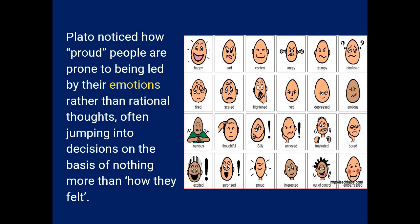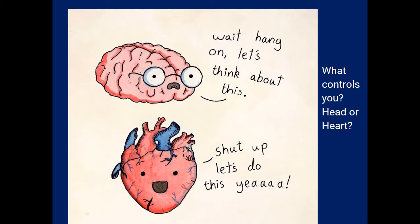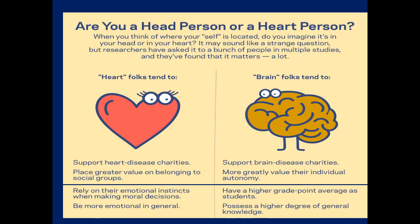How many of you have problems controlling your emotions? What controls you — your head or your heart? The rational aspect says let's think about this, while the impulsive side says just do it — 'just send it.' If you're a heart person versus a head person, that's going to greatly change your experiences. Heart people put greater value on belonging to social groups, rely on emotional instincts, and tend to swing to extremes. Brain people want more control — autonomy — and tend to have higher grades, higher knowledge, and a higher degree of self-control.